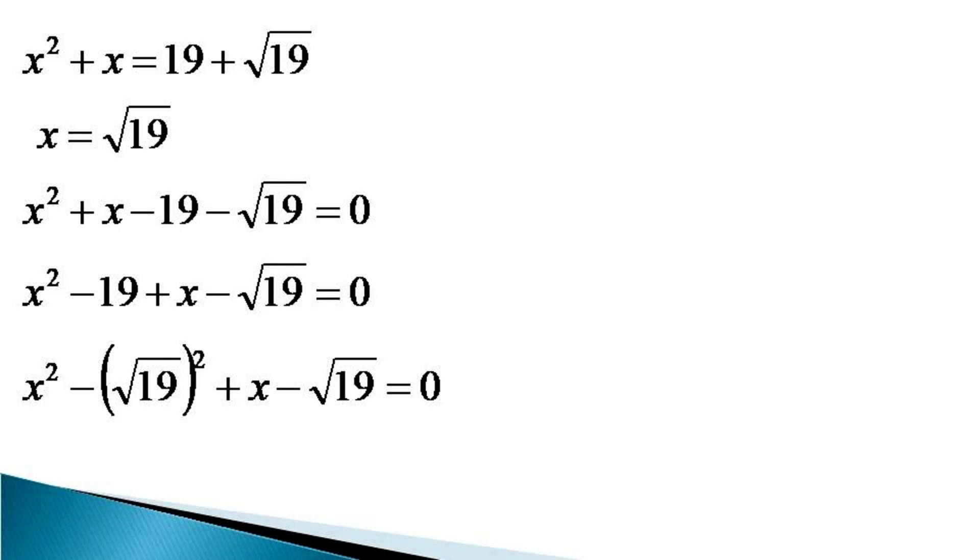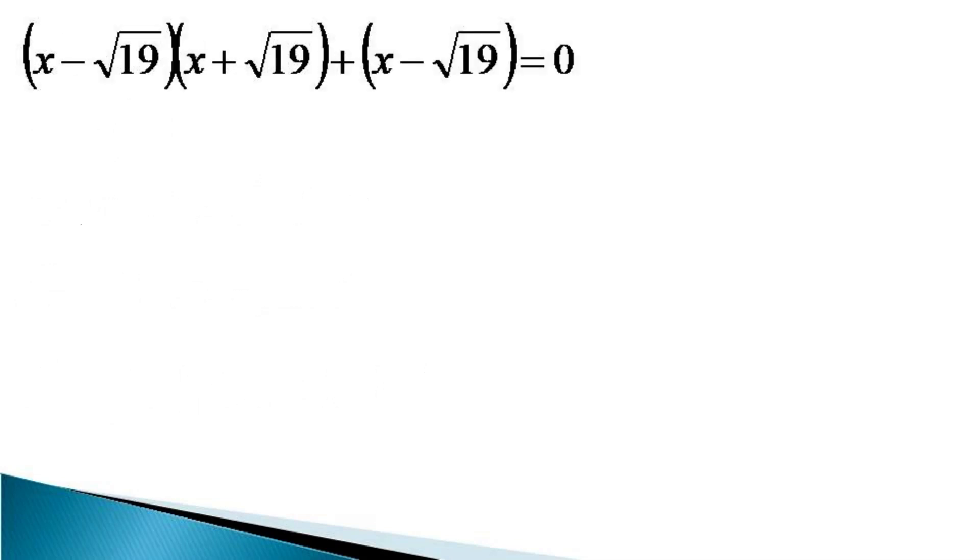The first two terms can be factorized as x plus root 19 and x minus root 19 and that gives us the equation as x minus root 19 into x plus root 19 plus x minus root 19 is equal to 0.